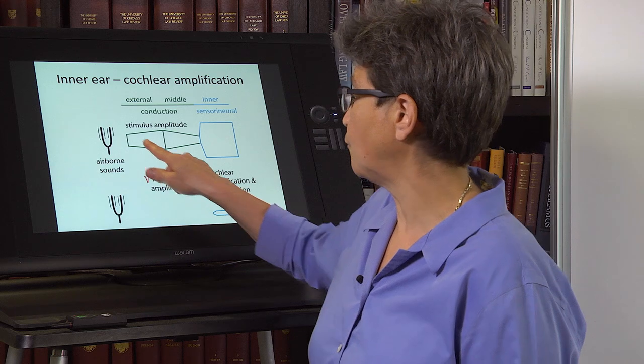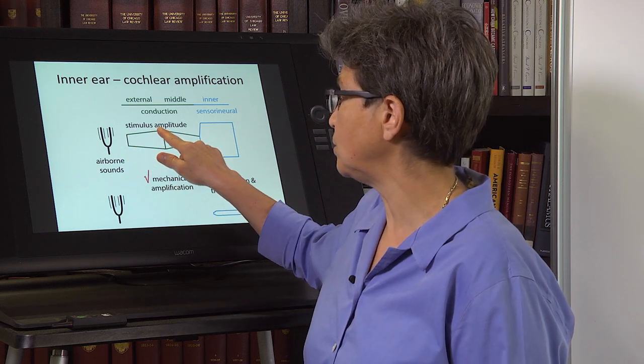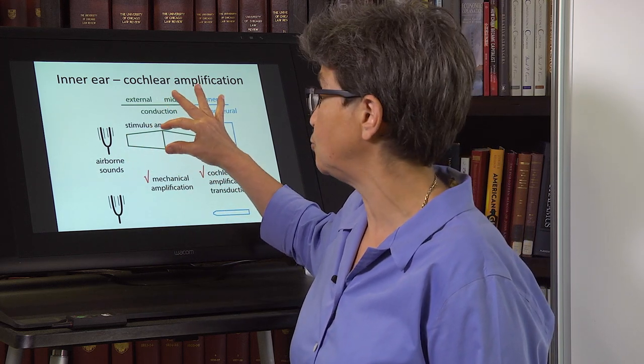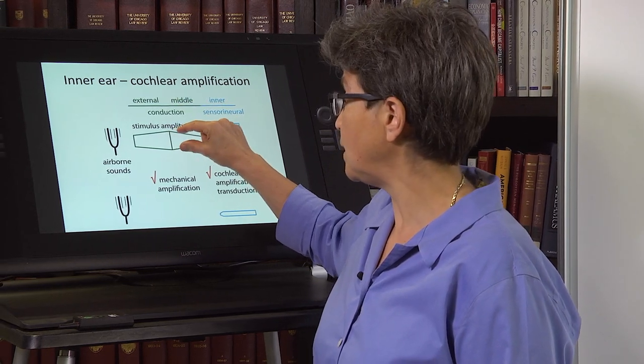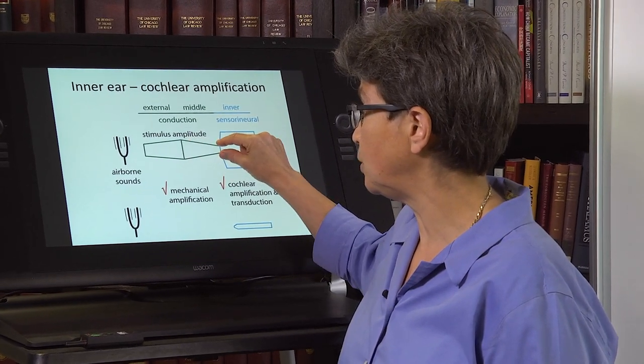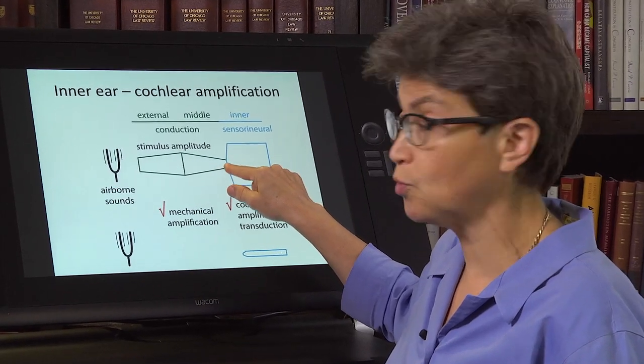Okay, so what we've seen so far is that in the external ear, there's an increase in the amplitude of the sound that's coming in, and that we then lose amplitude in the middle ear, but not quite as much as we would otherwise.